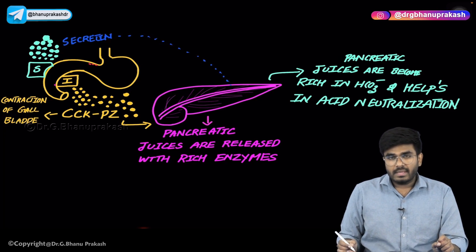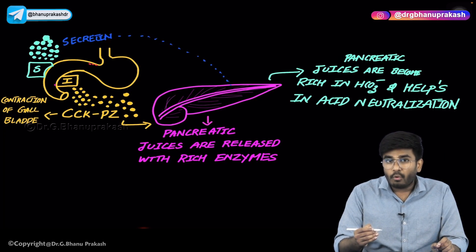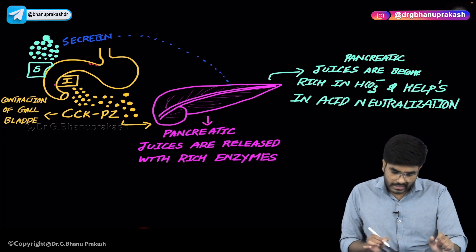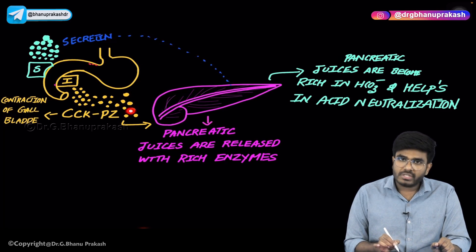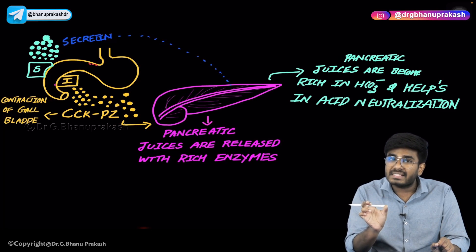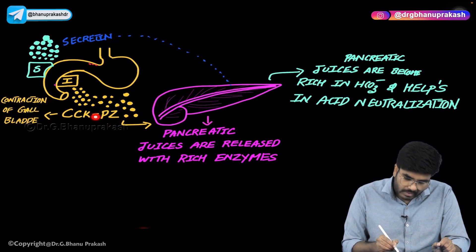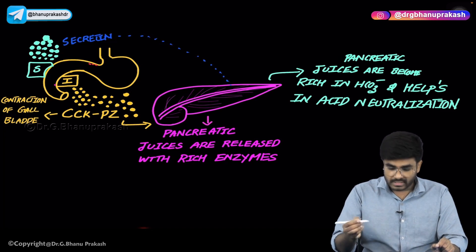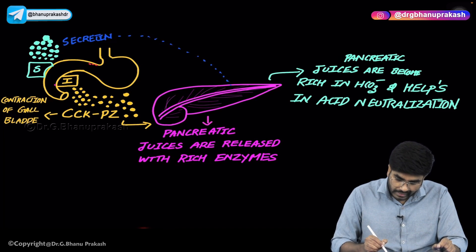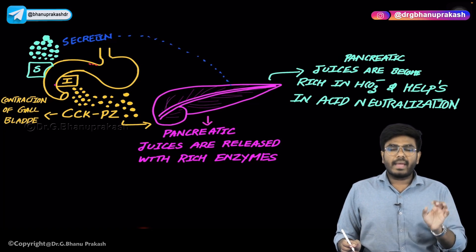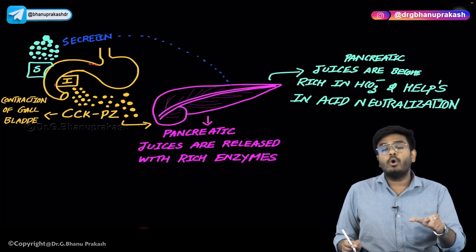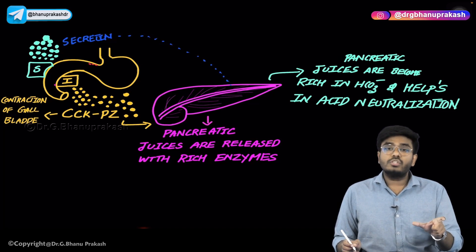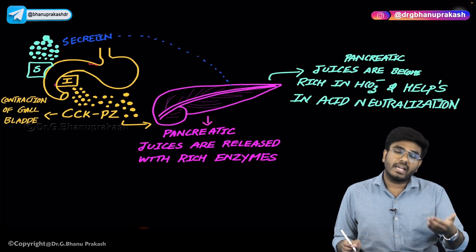The same pancreatic juices become rich in digestive enzymes when acted upon by cholecystokinin-pancreozymin. The I cell produces cholecystokinin-pancreozymin — the 'pancreozymin' part literally means pancreatic enzymes. When cholecystokinin-pancreozymin comes and acts on the pancreas, the pancreatic juices released are rich in digestive enzymes. So: secretin → more alkaline/bicarbonate-rich juices; cholecystokinin-pancreozymin → enzyme-rich juices.